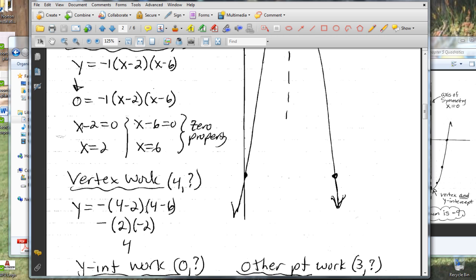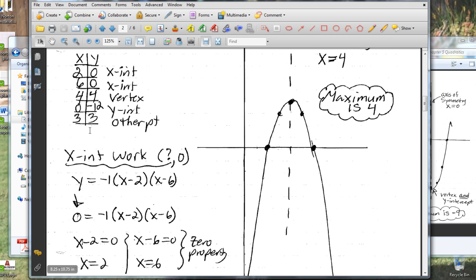We take our equation, plug four in, work that out, and in this particular problem, we get four again. So then we can plot our vertex, which we now know is four four. So we went over to four four, and we plotted our vertex.